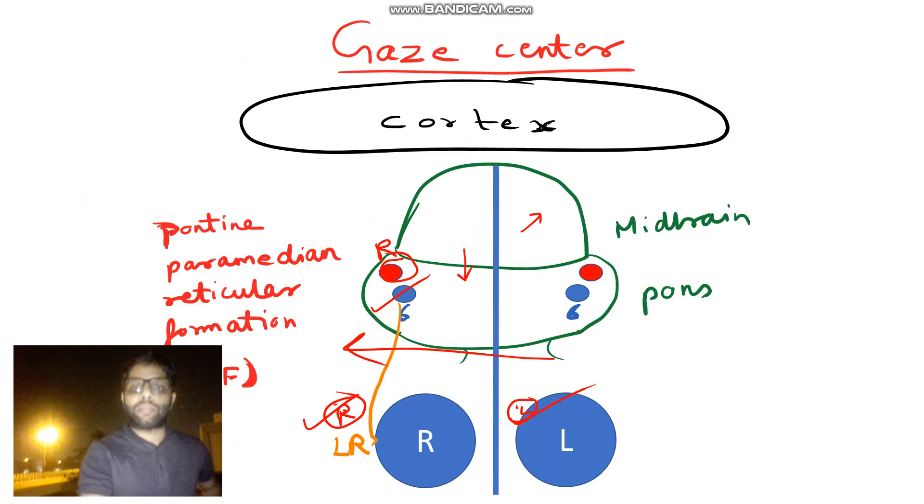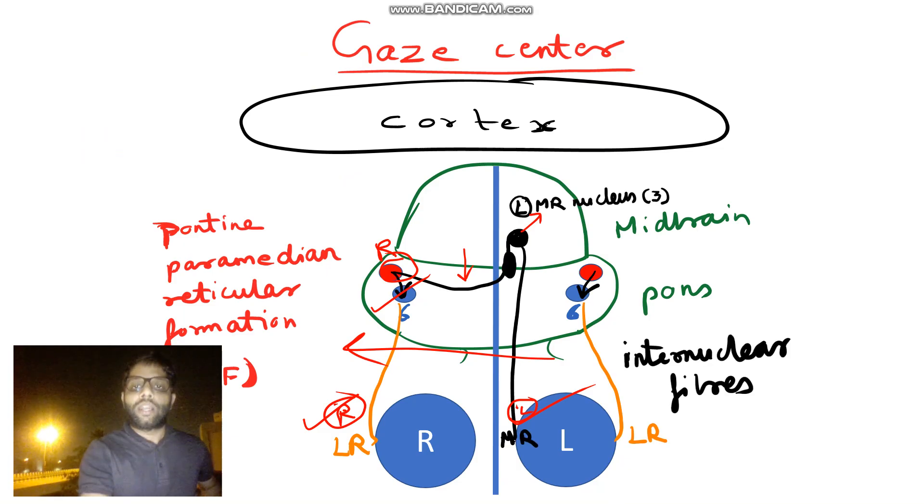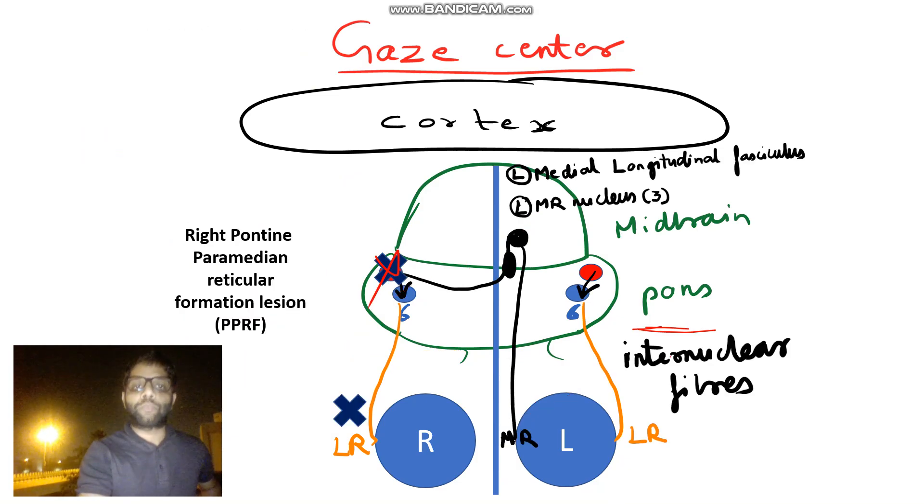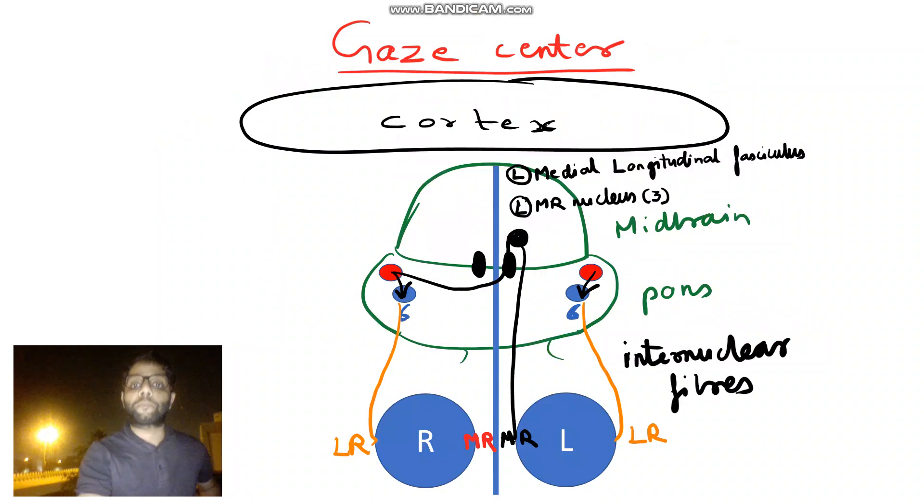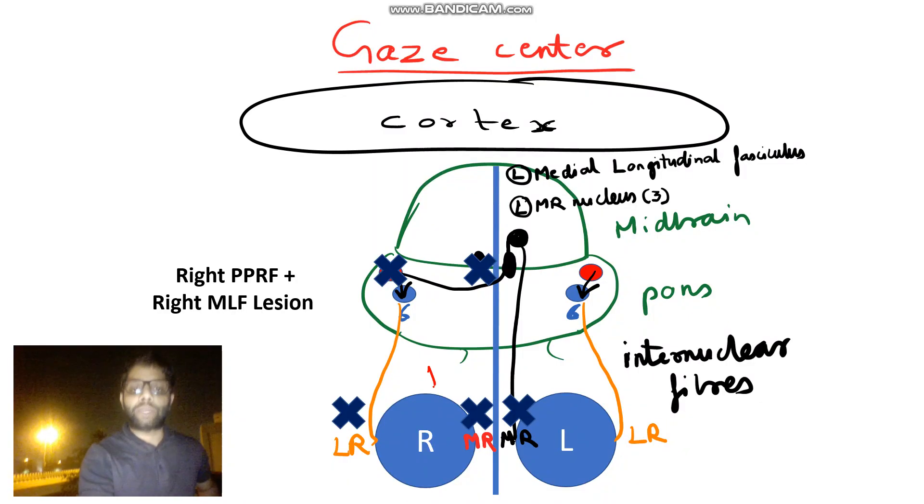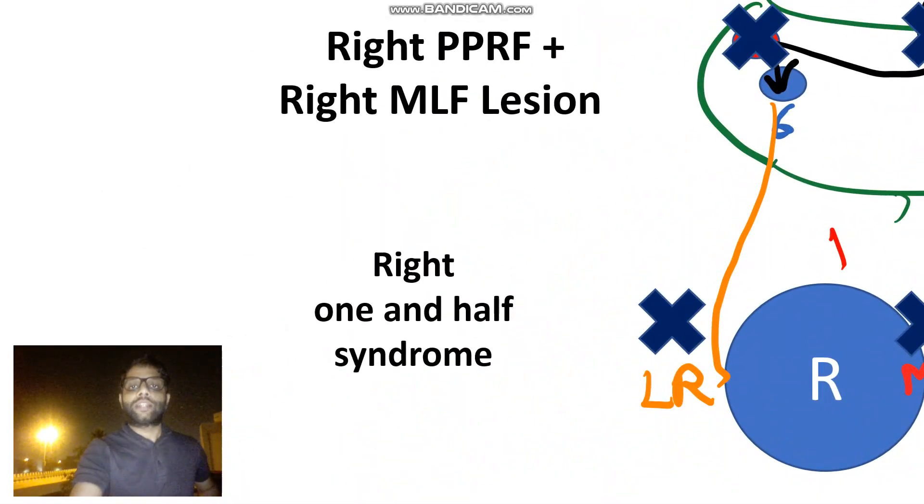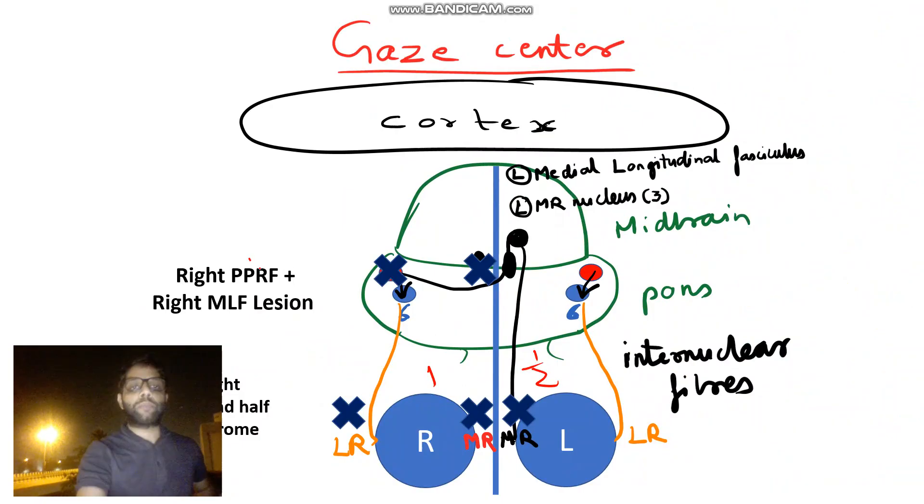From PPRF and MLF, we have seen different lesions. Lastly, if I tell you, if both of them, PPRF plus MLF are destroyed together. That is, what will happen? Right PPRF controlling right LR and left MR. And right MLF is controlling right MR. So one eye is completely destroyed. Other eye is half muscle destroyed. That is known as one and a half syndrome. Seen in same side PPRF plus MLF lesions. How will the patient present to you?